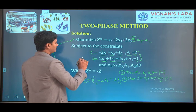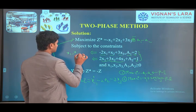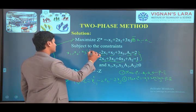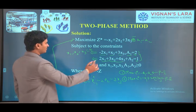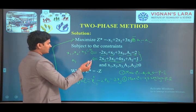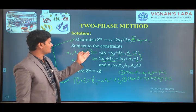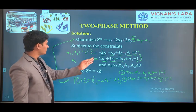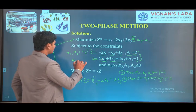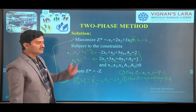The basic variables are a1 and a2. The non-basic variables are x1, x2, x3, and their values are equal to 0. When substituting the non-basic variable values of 0 into the linear equations, we get a1 = 2 and a2 = 1. These are our basic variables for the initial basic feasible solution.